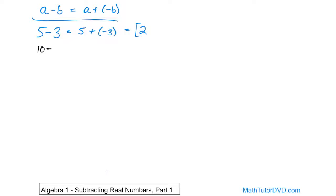Similarly, if we had ten minus two, that's the same as ten plus negative two. Any time you have a subtraction, it can be written as the addition of a negative number. When you're adding two different signs — positive and negative — you just subtract them. Ten minus two gives you eight, and the sign goes with the larger absolute value, which is positive, so the answer is eight.